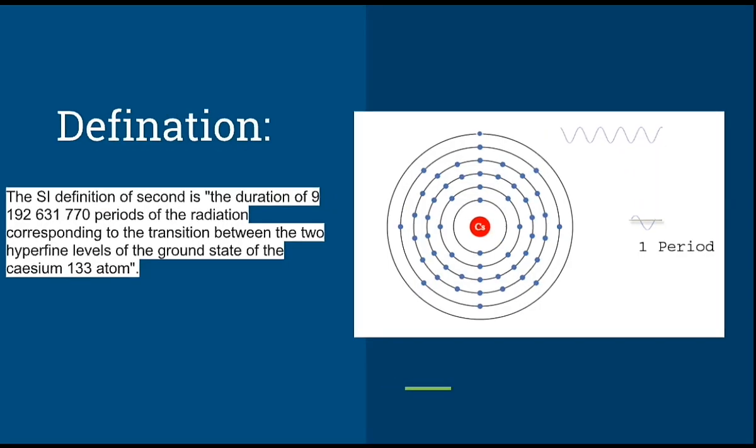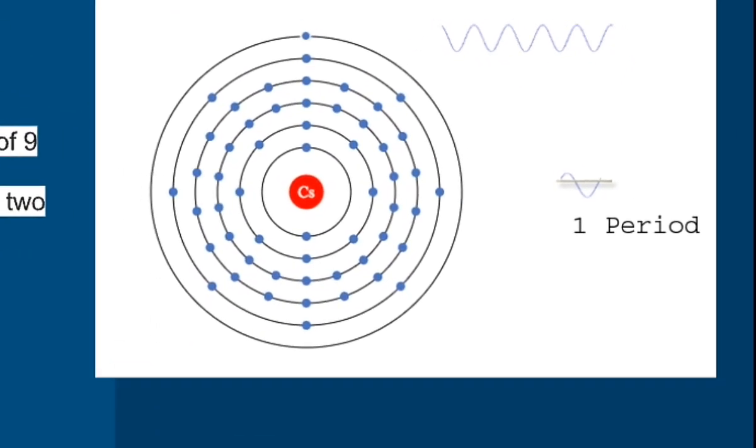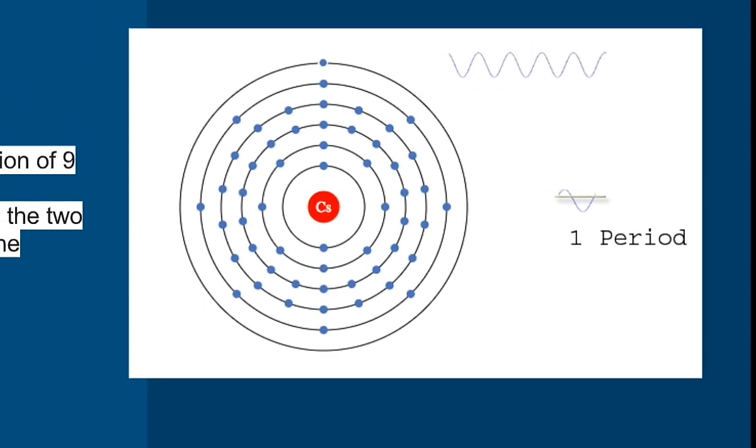Look at this video. In a cesium atom, it has one electron in the outermost orbit. When this electron oscillates between two hyperfine levels, it produces a wave as shown in the video.